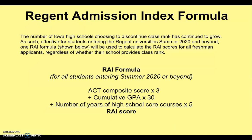This year the formula is changing a little bit. Instead of looking at class rank — the Regent admissions have decided not to look at class rank anymore. What you're seeing here on this screen is the new formula. As your students take the ACT and go through their high school years, we're going to want to pay attention to their ACT score, their cumulative GPA, and the number of core classes that students are taking. From this slide, we just really want you to take away that we're not looking at class rank anymore for the Regent index.